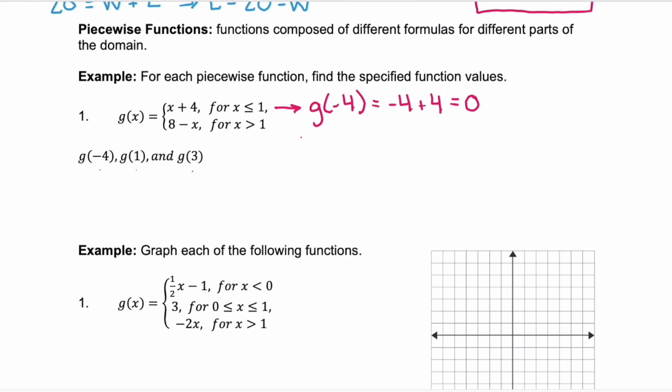How about g of 1? Well, 1 falls in the first interval again. So g of 1 is equal to 1 plus 4 or is equal to 5. And then our last, g of 3. Well, 3 is greater than 1 so it falls into the second piece. So it's 8 minus 3 or g of 3 equals 5.